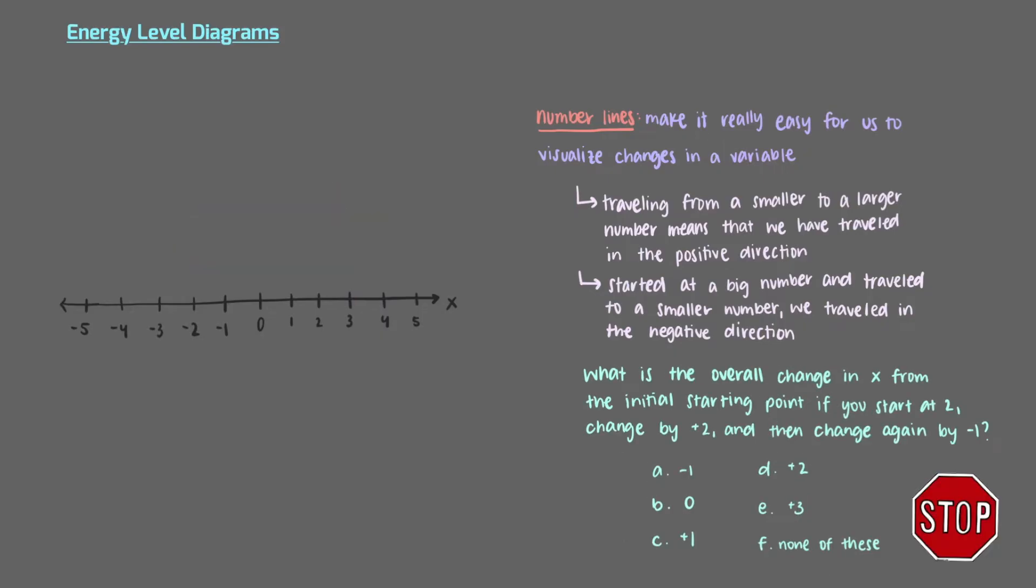What is the overall change in x from the initial starting point if you start at 2, change by plus 2, and then change again by minus 1? We started at 2 and ended at 3. Although we took a pretty indirect route to get there, overall we only moved one unit in the positive direction to get to 3. The arrow to show the net movement looks like this.